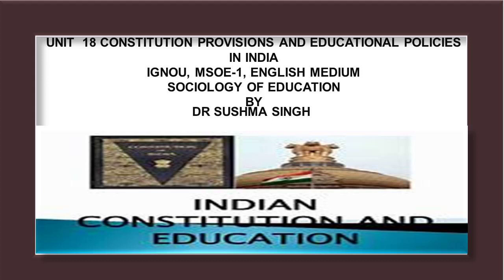The first list is the Union List. Entry 63 covers institutions known at the commencement of the Constitution as Banaras Hindu University, Aligarh Muslim University, and Delhi University, the university established in pursuance of Article 371E, and any other institution declared by Parliament by law to be an institution of national importance. Later on, other institutions too have been included in this list.